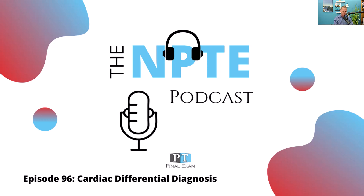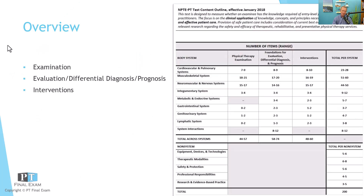The NPTE is not an adaptive test. This means that the questions do not change based on whether you're getting them right or wrong. Rather, it's a straight set of questions and your job is to find the correct answer from each of the answer options presented. In the end, it will reduce the number of questions slightly to accommodate the more time required to read them.